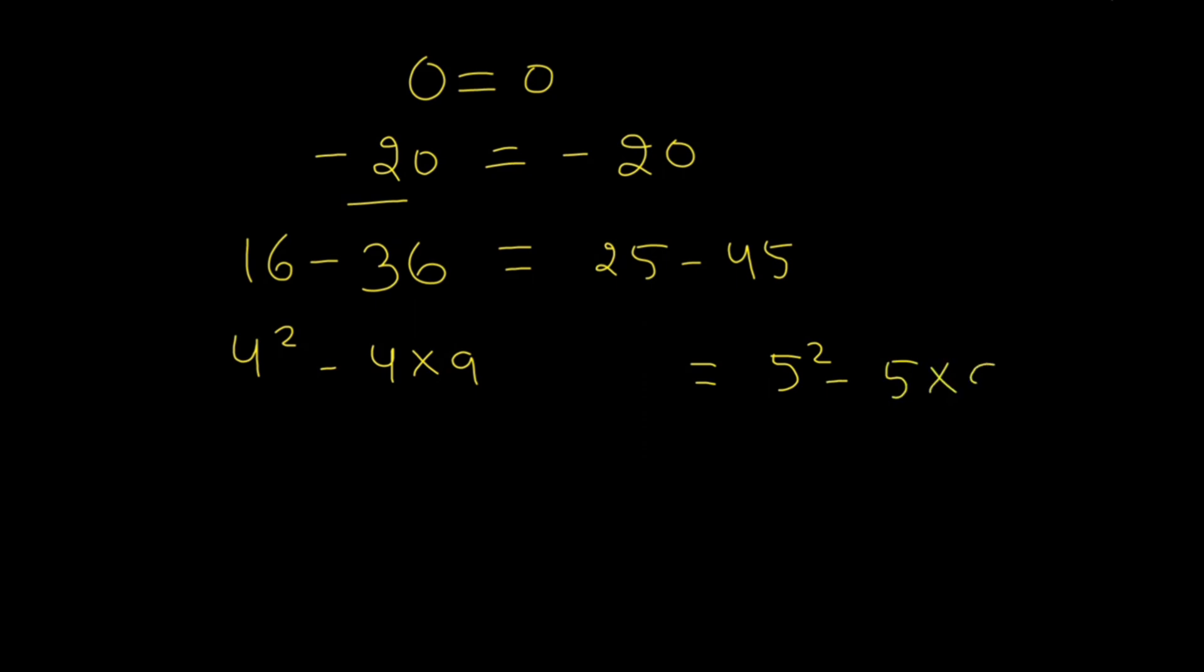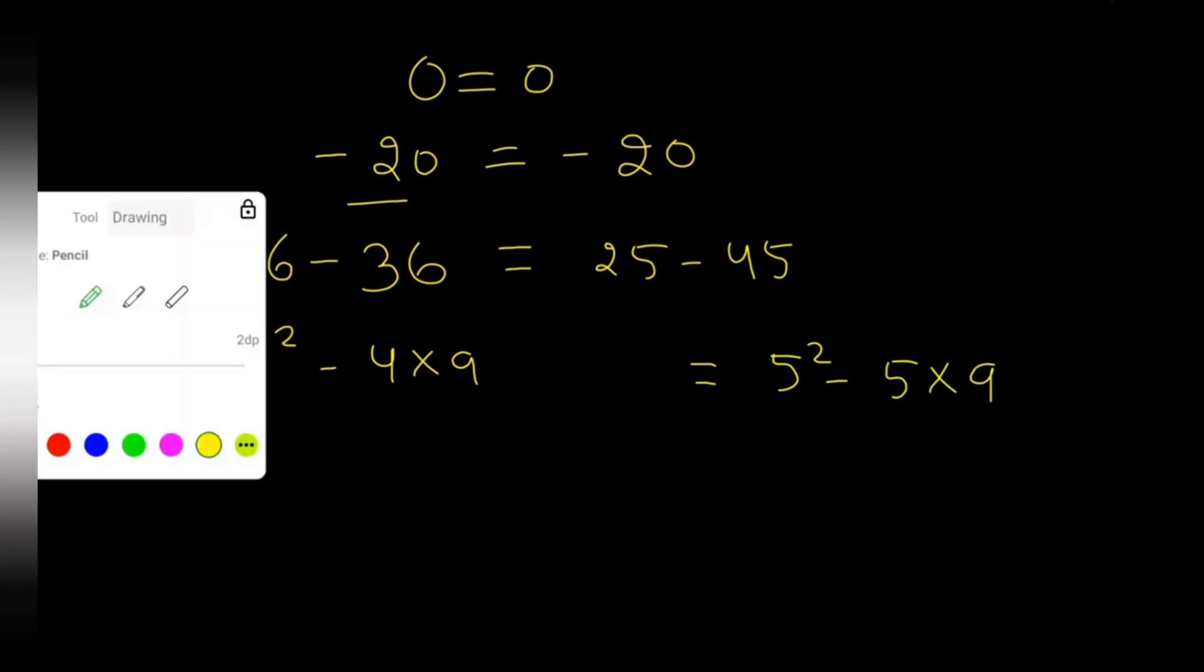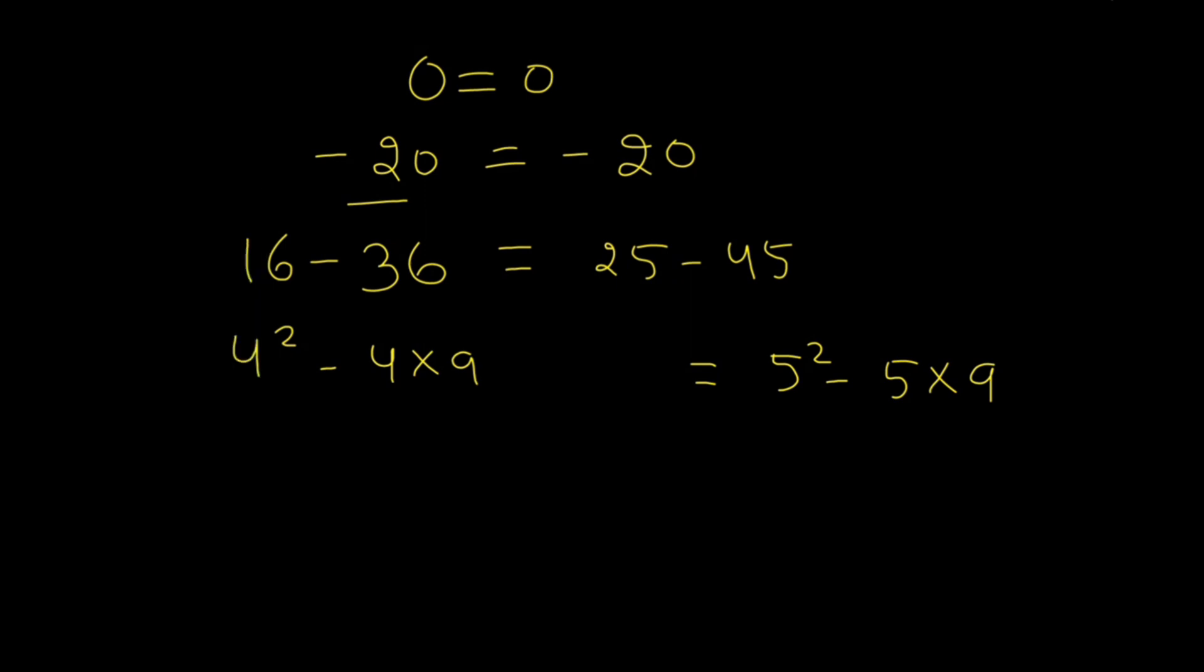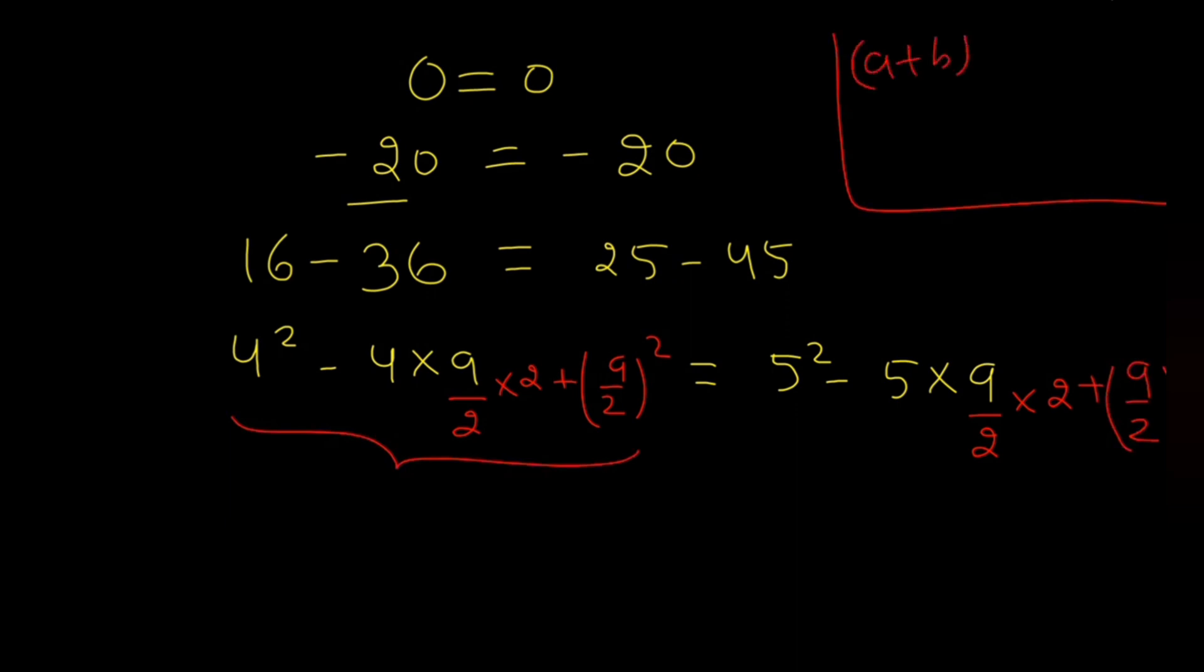Now, if I multiply and divide this 9 by 2 and similarly on this side, and add 9 by 2 squared on this side and this side too. You have started in your lower classes that a plus b whole squared equals a squared plus b squared plus 2ab.